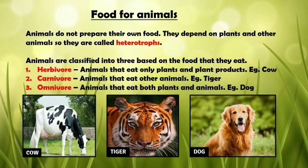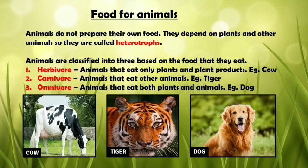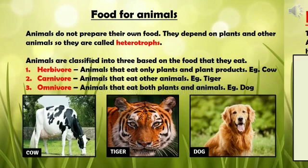Animals do not prepare their own food; they depend on plants and other animals for food. Therefore animals are called heterotrophs. All animals do not eat the same type of food. Based on the food they eat, animals are classified as: herbivores — animals that eat only plants and plant products, example cow; carnivores — animals that eat other animals, example tiger; omnivores — animals that eat both plants and animals, example dog.